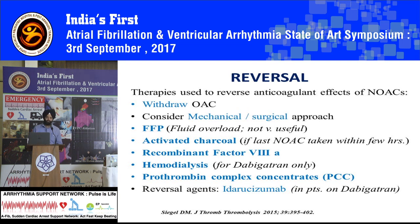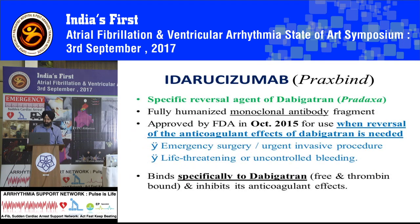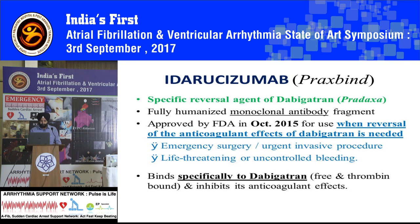But what in case of severe bleeding? In severe cases, there was no antidote available until recently, when a specific reversal agent for dabigatran was introduced — edarucizumab. Prothrombin complex concentrates were given earlier, but there are also chances of thrombosis because of that.